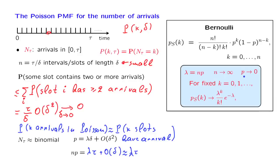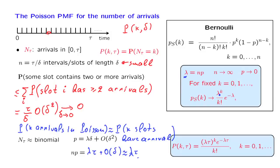If we let n go to infinity and p go to 0 so that their product stays constant, we have shown that the binomial PMF converges to the Poisson PMF. Notice one small difference: n times p here is equal to lambda, whereas here n times p is equal to lambda tau. This means we apply the Poisson formula with lambda replaced by lambda tau, and this gives us the final answer: the probability of k arrivals during a time interval of length tau in the Poisson process, which is the Poisson PMF with parameter lambda tau.